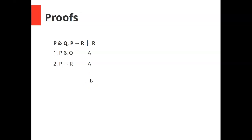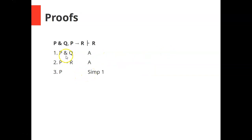To use modus ponens, we need the antecedent P. We can get P from line 1 using the rule of simplification — if you have a conjunction you can infer either conjunct. So line 3 is P, by simplification from line 1. Now on line 4 we can infer R by modus ponens from lines 2 and 3, since we have the conditional and its antecedent. That's where we were supposed to get, so we're done.